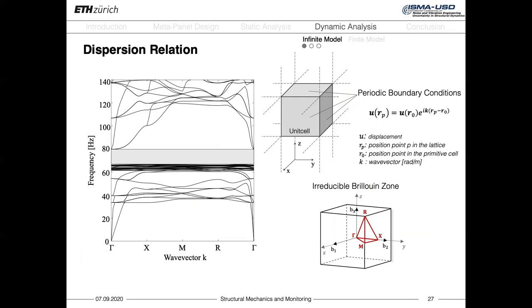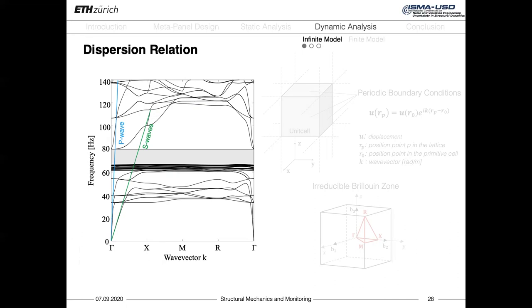The dispersion relations on your left tells us that the material we are investigating is dispersive, and that in this specific case, it will attenuate the incoming waves with frequencies between approximately 65 and 80 Hz. Indeed, if we were considering an homogeneous isotropic non-dispersive material, the dispersion relation would have been represented by the colored straight lines, which describe, respectively, a P wave and two S waves.